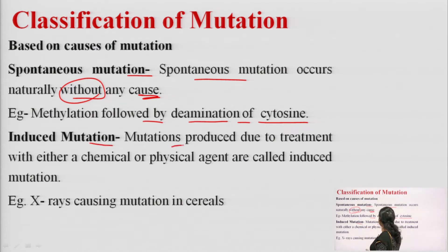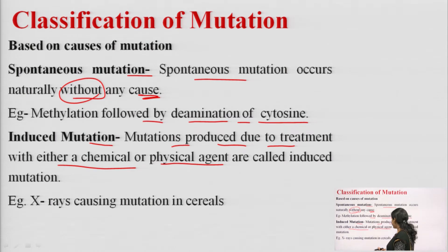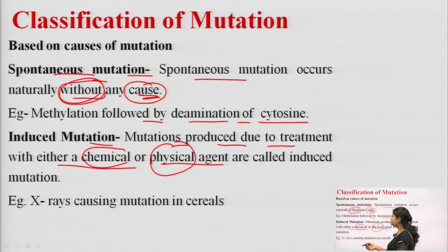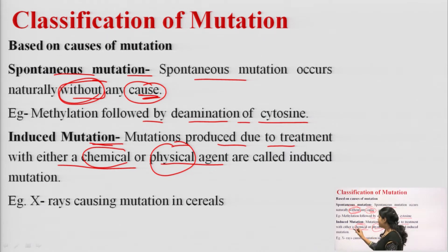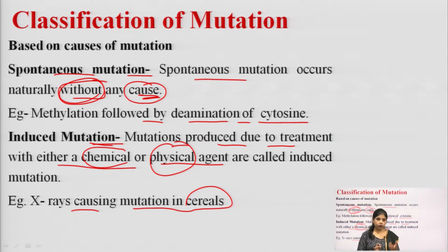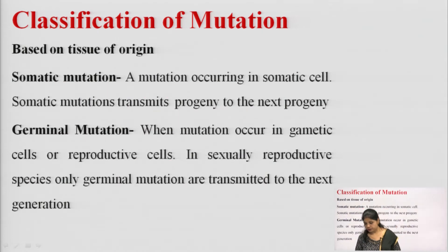Induced mutation refers to mutations produced due to treatment with either a chemical or a physical agent — these are called induced mutations. If any chemical agents or physical agents are responsible for causing the mutations, that kind is known as induced mutation. An example of induced mutation is X-ray causing mutation in cereals, where X-ray radiation is used as an agent to cause mutation.